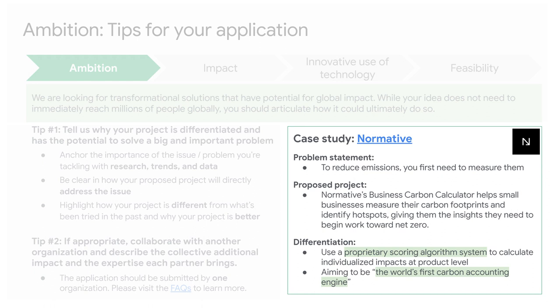To demonstrate a clear problem statement and project description evaluated under ambition, let's talk about a previous recipient, Normative. Normative recognized that for small businesses, it's difficult to get an accurate understanding of their carbon emissions — after all, to reduce emissions, you first need to measure them. To address this gap, Normative developed a carbon calculator that helps small businesses automatically compile their full, detailed carbon footprint, including their supply chain. By using a proprietary system to automatically calculate a small business's impact, Normative removes the difficulty of data collection and enables the business to spend more time understanding insights and making decisions. We were also inspired by Normative's ambitious goal to be the world's first carbon accounting engine.